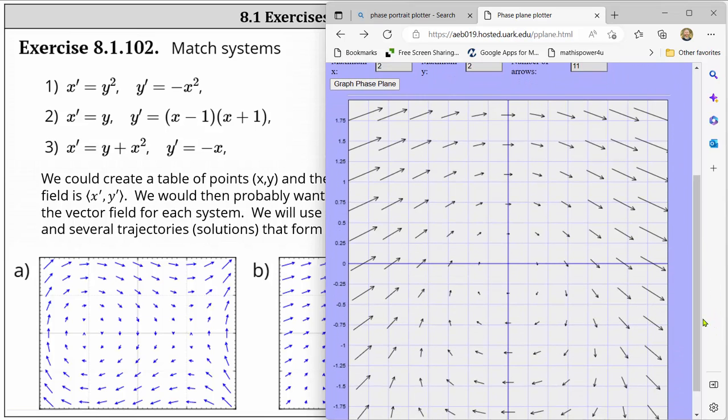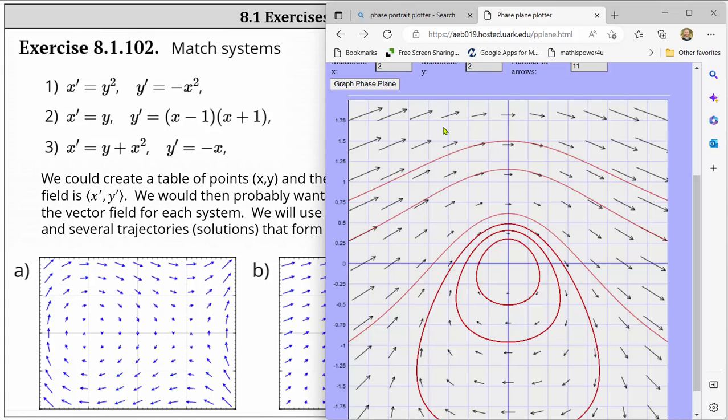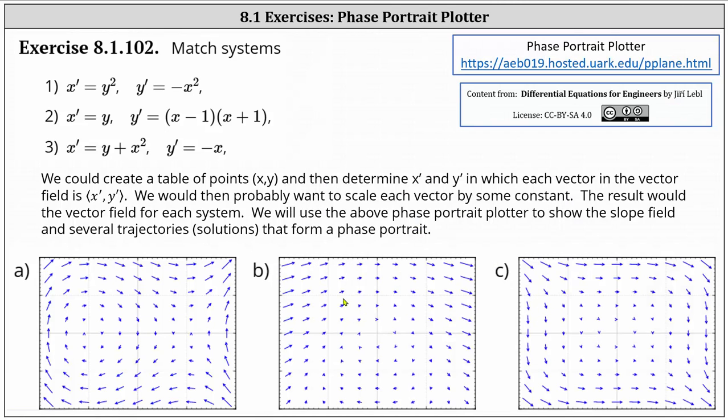Scroll down. This looks pretty good. Let's show some trajectories. Once again we can see that both x prime and y prime are zero when x is zero and y is zero which indicates the origin of zero comma zero is a critical point. And the given slope field does match the vector field b.